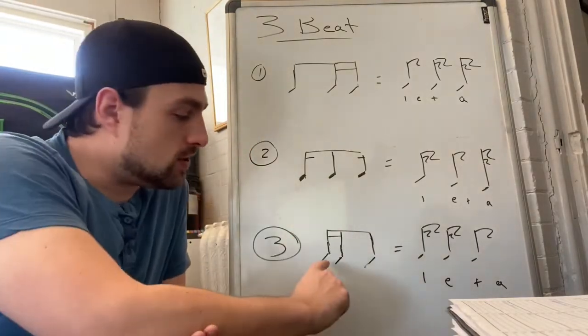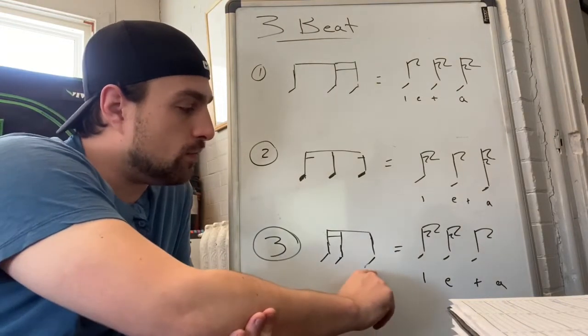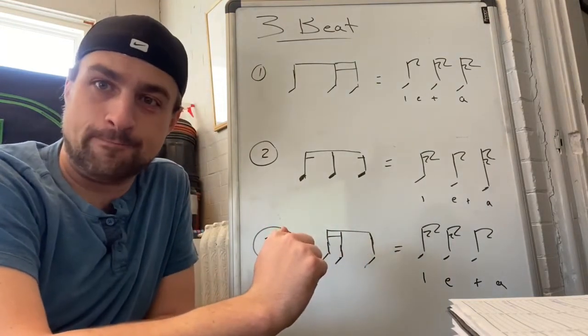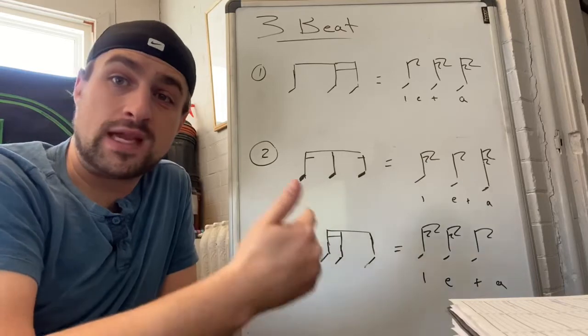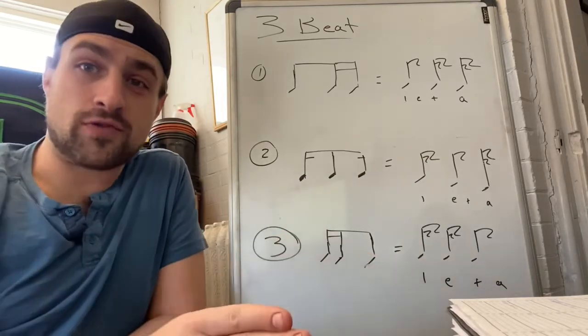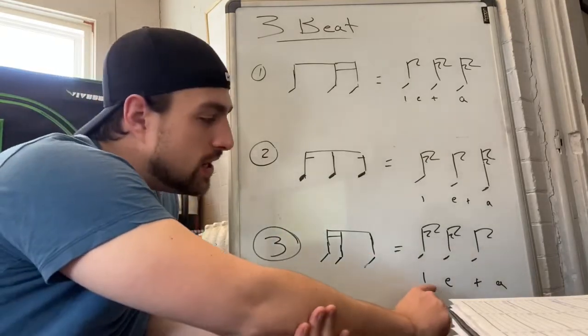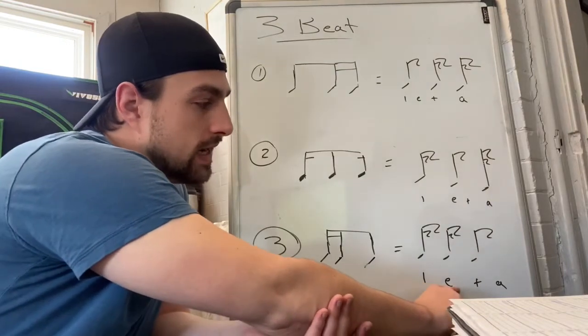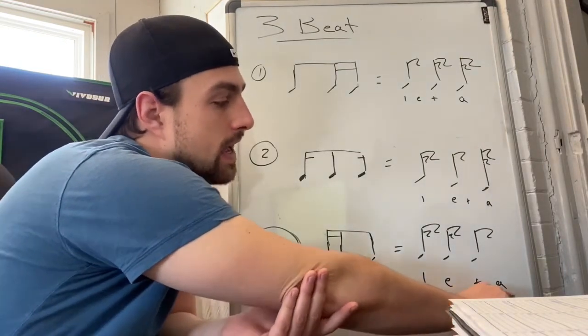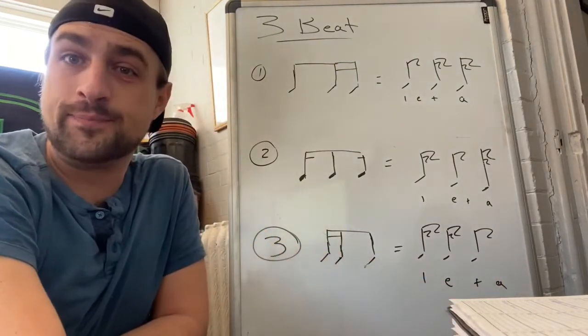The third beat involves the two sixteenth notes followed by the eighth note at the end. This means you're gonna have three hits in a row, and you're gonna hold for the last hit. As you can see, you hit on one, you hit on e, you hit on and, and then you hold for a.